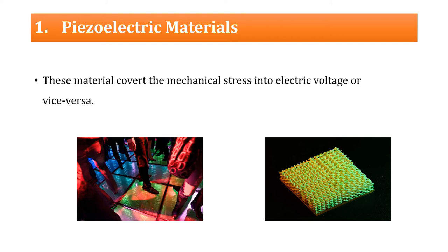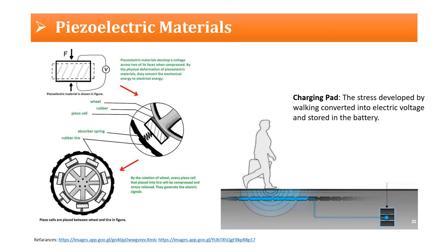The first type of smart material is piezoelectric material. This type of material activates or deactivates itself based on mechanical behavior — it converts mechanical stress into electric voltage, or electric voltage into mechanical stress. An example is a dance floor made of piezoelectric material: when there is movement on the dance floor the lights turn on, and when there is no movement the lights go off.